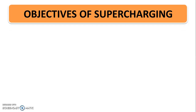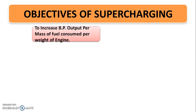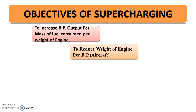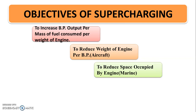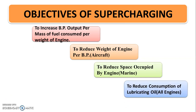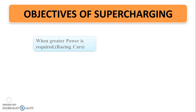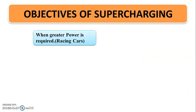Objectives of supercharging. The prime objective of supercharging is to increase the brake power output per mass of fuel consumed per weight of engine. The secondary objectives are: to reduce the weight of engine per brake power as required in case of aircraft; to reduce the space occupied by the engine as required in case of marine engines; to reduce the consumption of lubricating oil in case of all types of engines; and to increase the power output of an engine by increasing density of the charge at intake when greater power is required, as in case of racing cars.